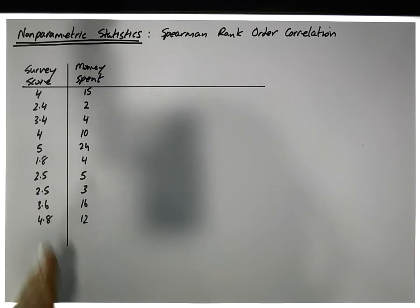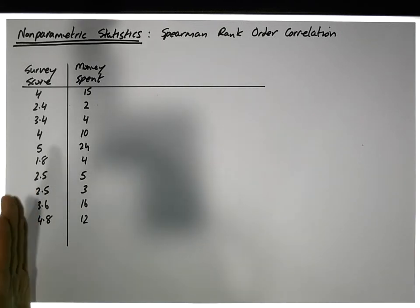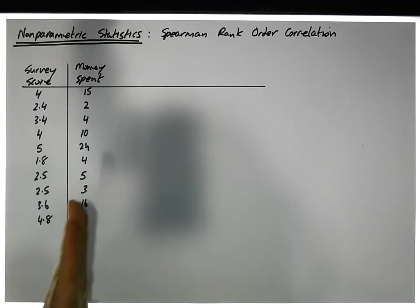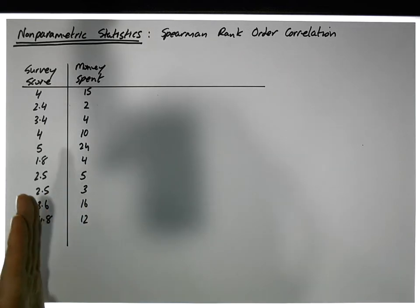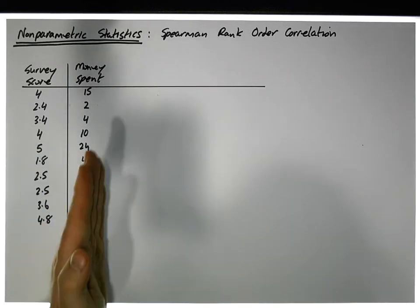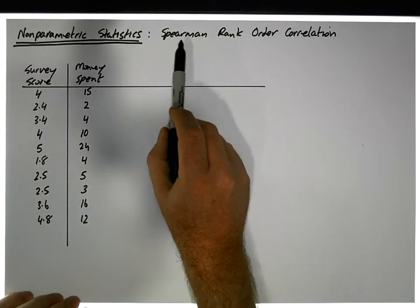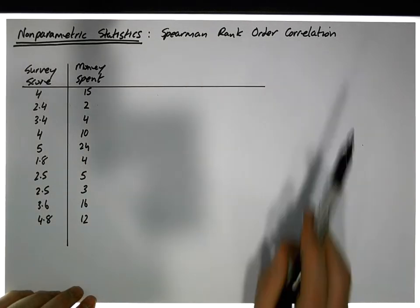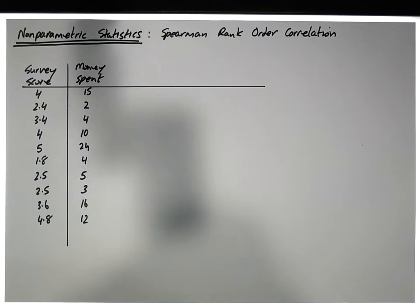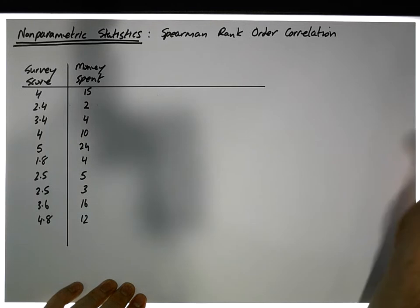So in the case where you have an ordinal variable, or two ordinal variables, or an ordinal variable and a continuous interval ratio variable, the most appropriate thing to do is the Spearman rank order correlation to calculate the strength of association between the two variables.